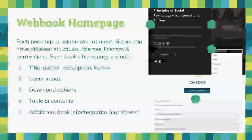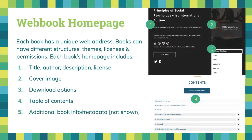In addition to being a large network, each book on the network has a unique web address — it lives at its own URL. On the right-hand side here is what a sample Pressbook web book looks like. You'll see there's a title and author information, a brief description, some licensing information, and a cover image. They chose to make downloads of this book available in many different formats from the book's homepage.